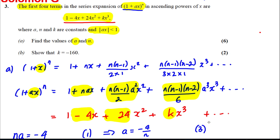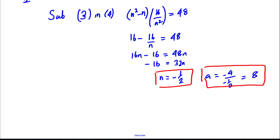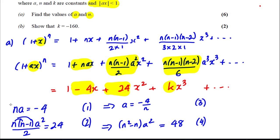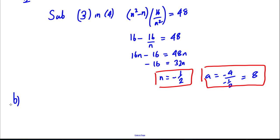Now, lastly, we were to show K is negative 160. Well, the other equation we could have written, we could have written that N(N minus 1)(N minus 2) over 6, A cubed was going to be equal to K.